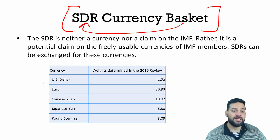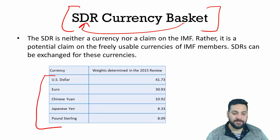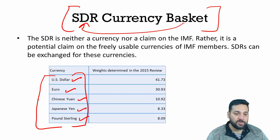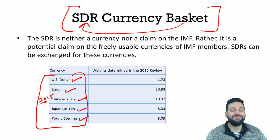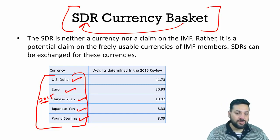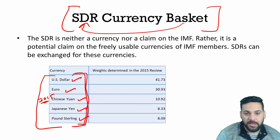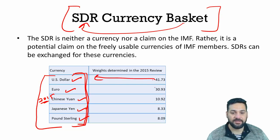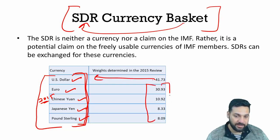The currency basket of the IMF's SDR consists of five currencies: US dollar, euro, Chinese yuan, Japanese yen, and pound sterling. The Chinese yuan was added in 2015. The US dollar carries a weight of 41.73 percent, and weights are assigned to each of the other currencies as well.